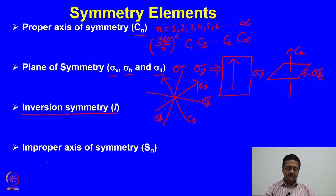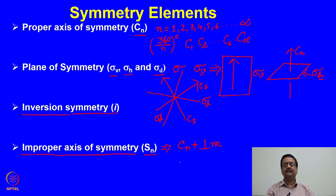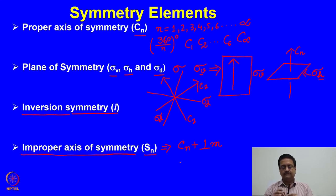The last symmetry element to understand is the improper axis of symmetry, written as Sn. Sn is not a single symmetry element — it actually means Cn plus a perpendicular mirror plane. That means if you have a C2 and a sigma h in the molecule, then you should have the S2 axis. If you rotate the molecule by 120 degrees and apply a mirror plane and get the same molecule back, then you say that it has an Sn axis.